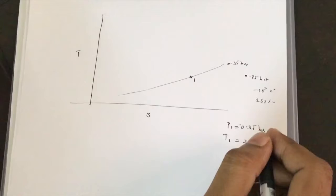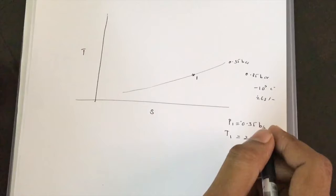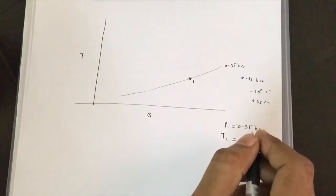Point 1 undergoes a ramming process. In the ramming process, there will be an increase in pressure. We want to find Point 2 with pressure P2 and temperature T2.